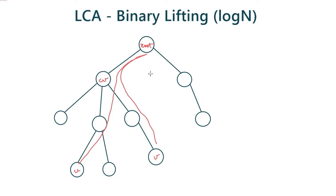We will be using binary lifting to find the LCA of U and V in O(log n) time. However, before finding the LCA between two nodes, we need to do some preprocessing. We need to find a common ancestor for both U and V which is closest to both U and V.